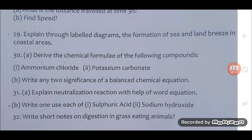30. A. Derive the chemical formula of the following compounds. 1. Ammonium chloride. 2. Potassium carbonate. B. Write any two significance of a balanced chemical equation.